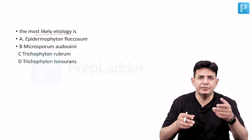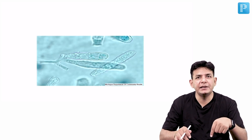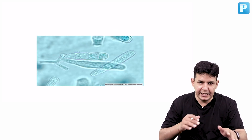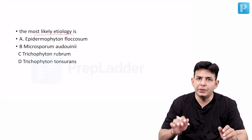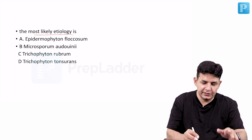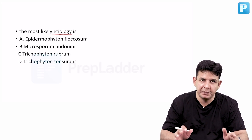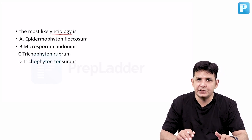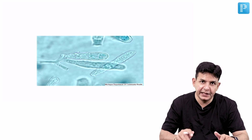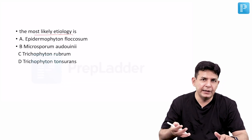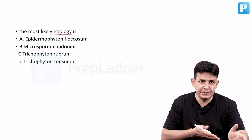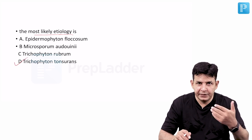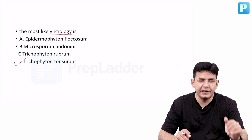The question can be asked in any form — they can give you this clinical picture or the microscopic picture along with this history, or directly the picture alone and change it as per their convenience. You need to know the answer in every form. The cylindrical macroconidia is a feature of Trichophyton, and based on both the picture and the history, the answer is Trichophyton tonsurans.